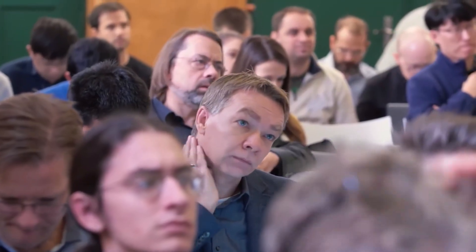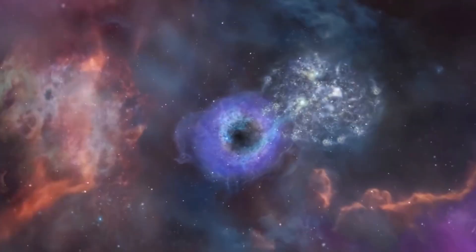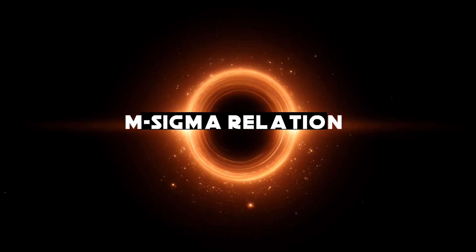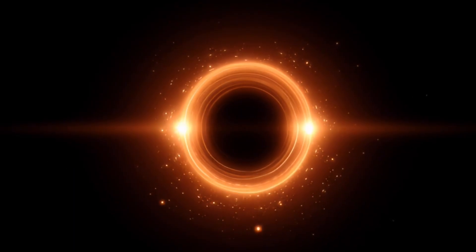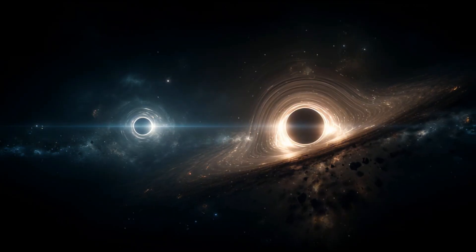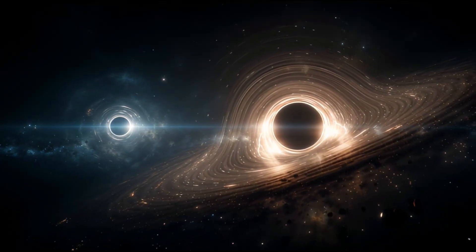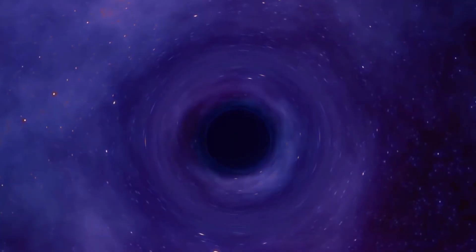But here's what will blow your mind. These supermassive black holes appear to have co-evolved with their galaxies. The mass of a galaxy's central black hole correlates precisely with the velocity dispersion of stars in the galaxy's bulge. This is called the M-sigma relation. It's as if galaxies and their central black holes are in constant communication, even though the black hole's direct gravitational influence extends only a tiny fraction of the galaxy's size. This suggests some fundamental connection we don't fully understand.